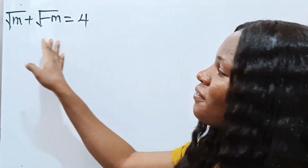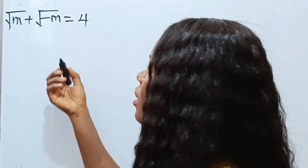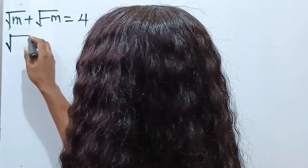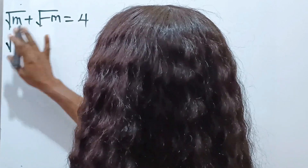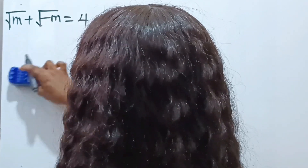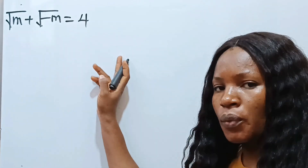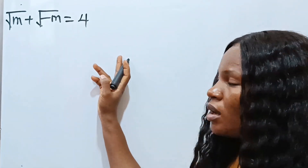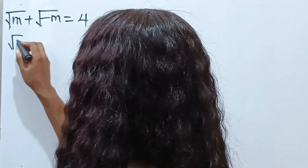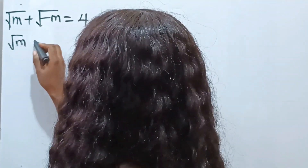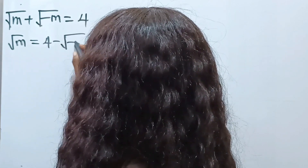Let's solve for the value of m. I want to transfer a term to the other side of the equation. When I do that, I will have square root of m is equal to four minus square root of negative m.